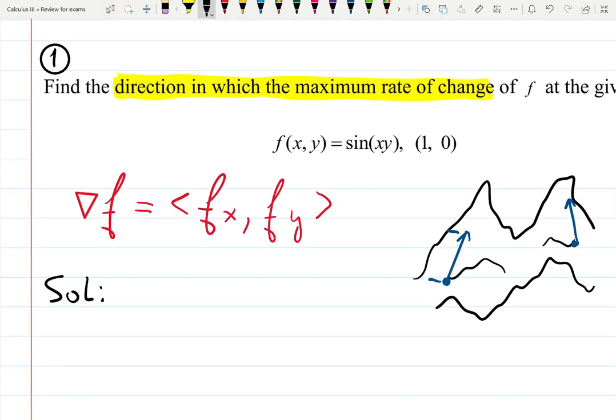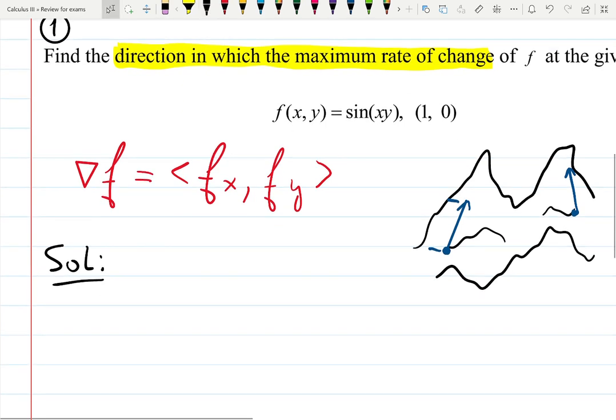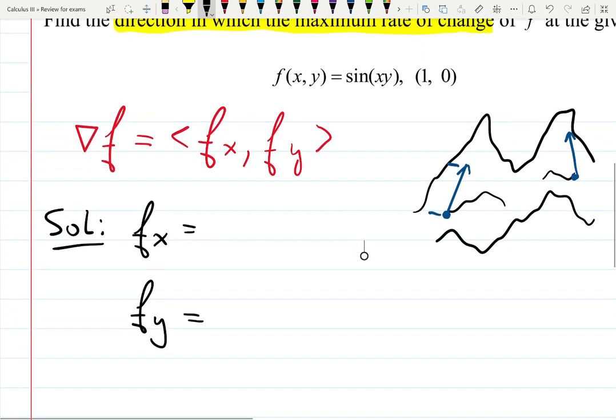Solution is actually easier than the whole explanation. You just need to find the partial derivatives with respect to x and with respect to y, and plug in the point (1,0). You need to use chain rule in this case. Derivative of sine is cosine.